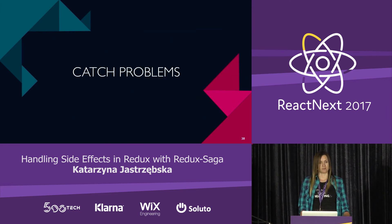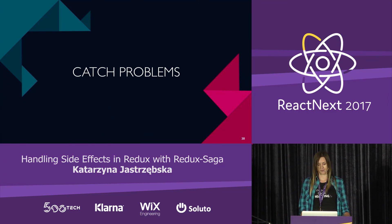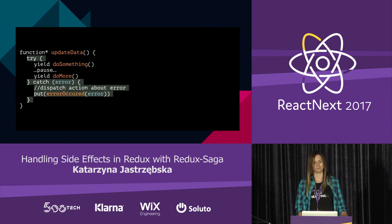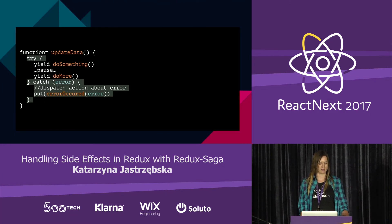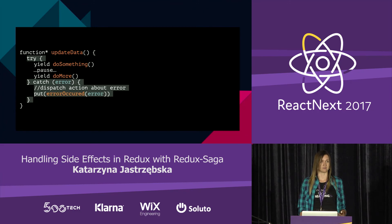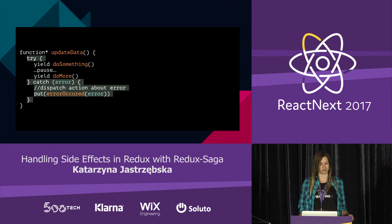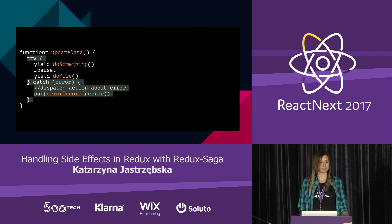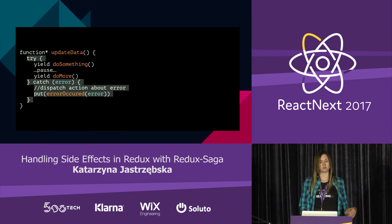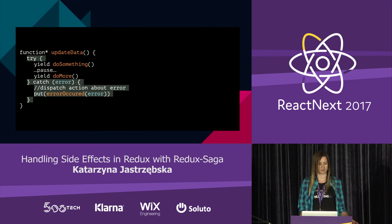What if you want to catch errors in your generator? That's where try/catch comes to the rescue. The syntax is really simple — we just try to perform our action in the generator. If an error appears — and this isn't only about errors from XHR requests or fetch operations, it also catches any JavaScript errors that appear in the generator itself — we can dispatch them to our reducer.